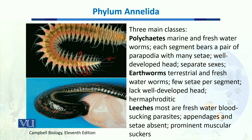The third class is Hirudinea (leeches). They are mostly freshwater blood-sucking parasites. They lack setae, and instead have very prominent muscular suckers, which are their distinctive feature.